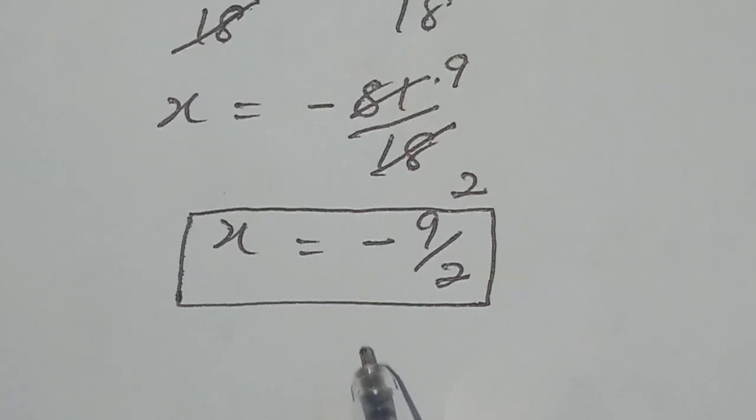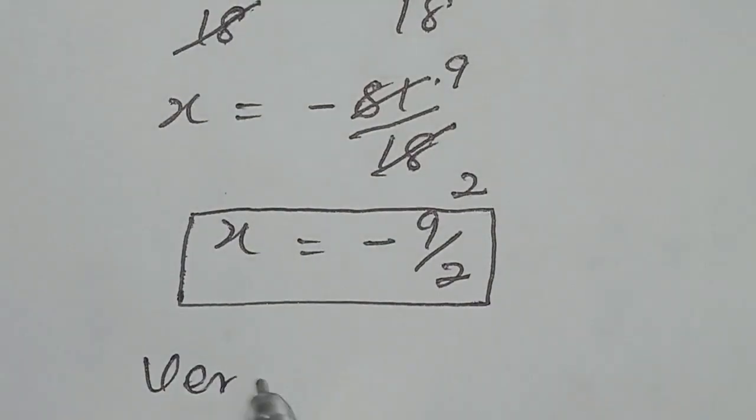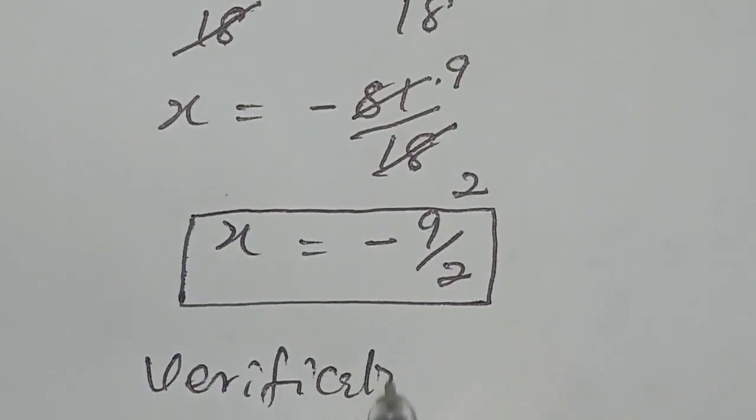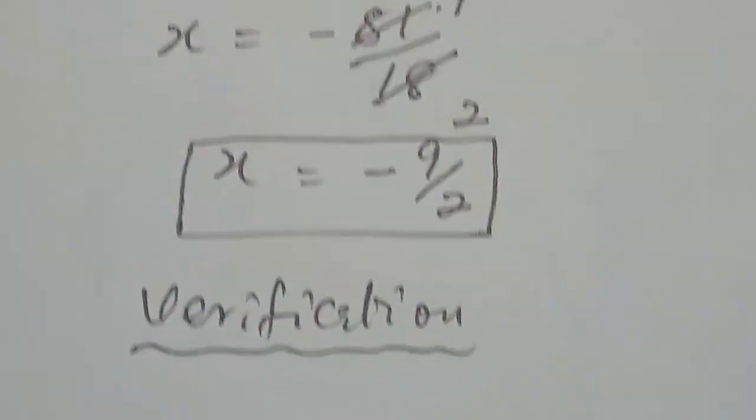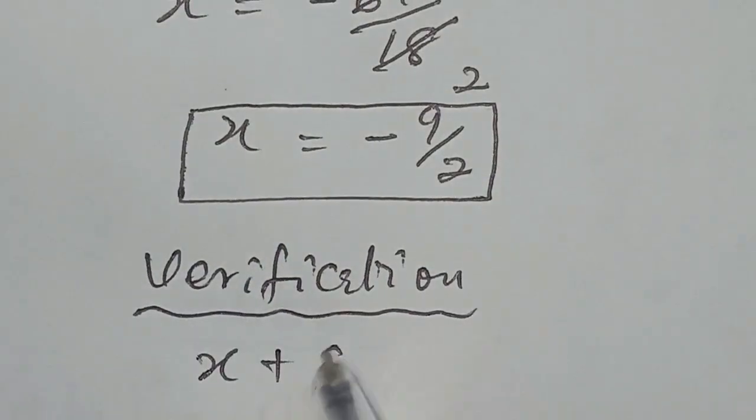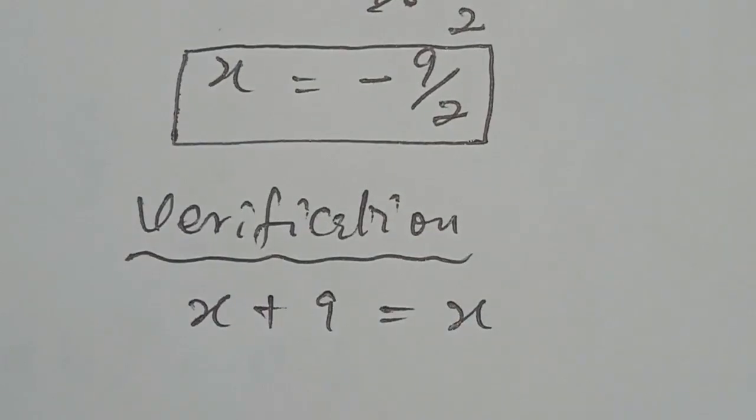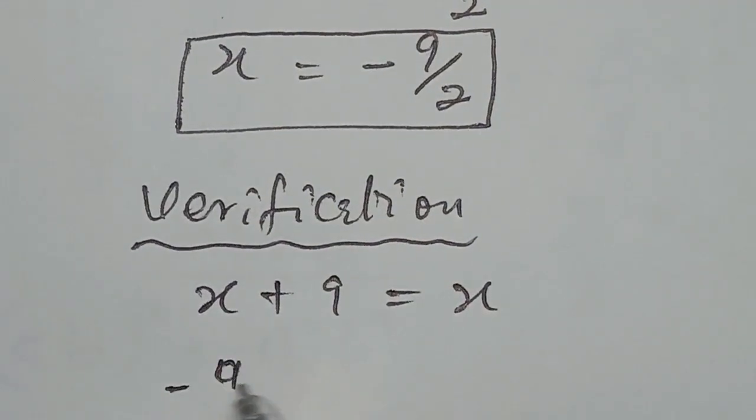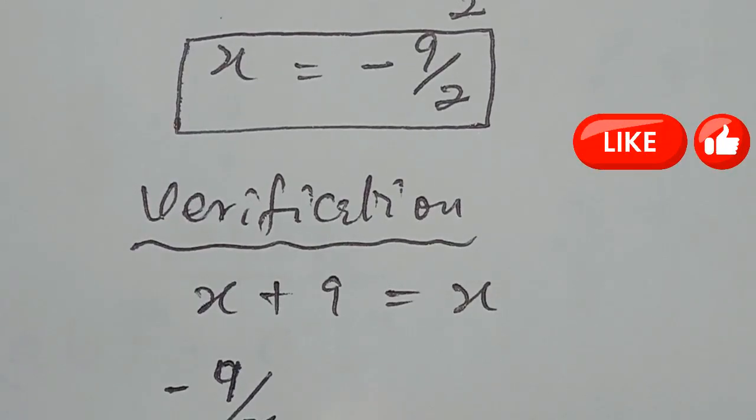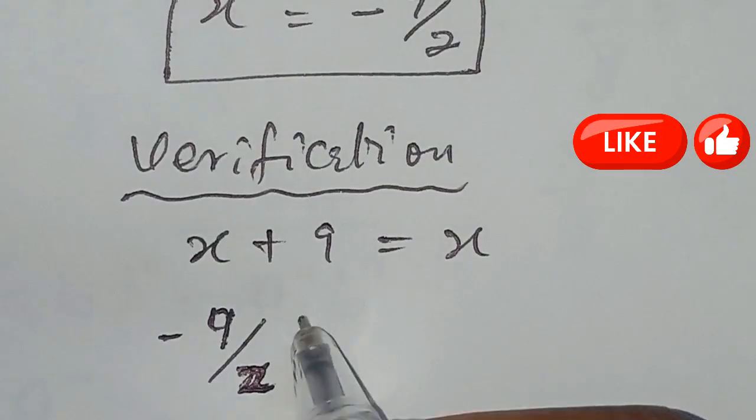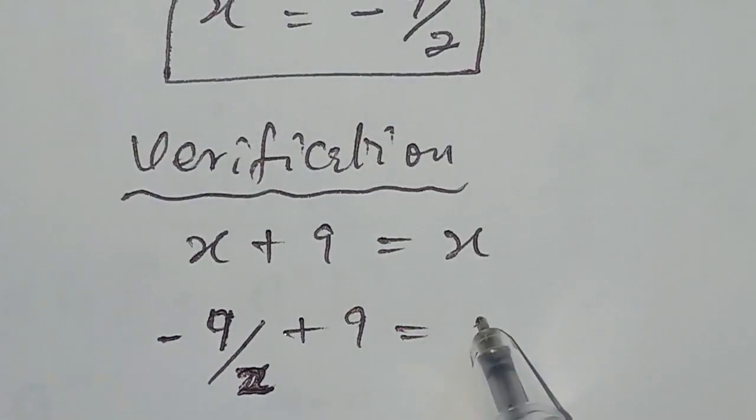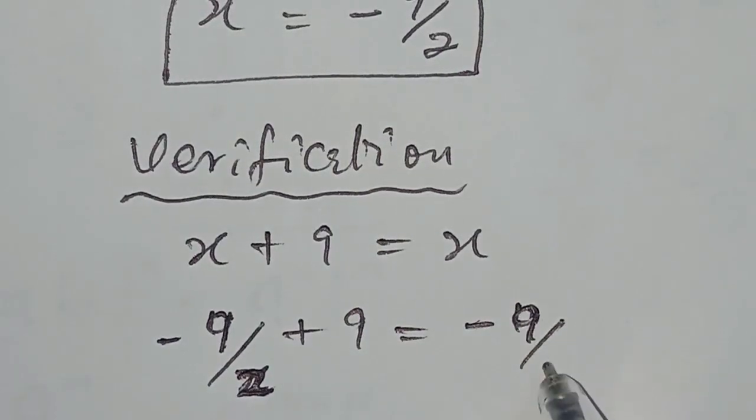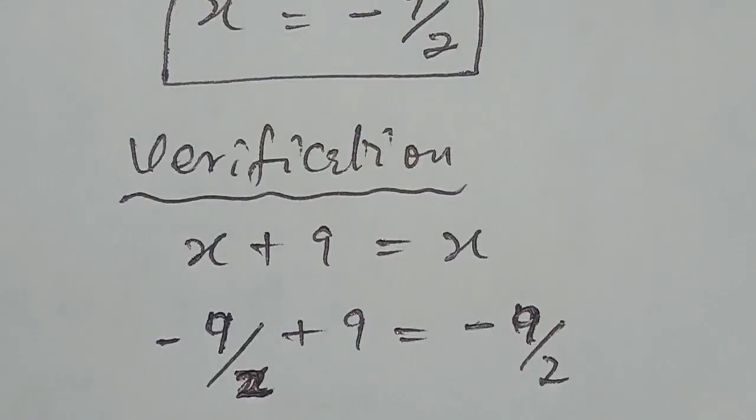Now, let's verify this value of x if it confirms our expression. Verification: we have x plus 9 equal to x. We substitute for the value of x. We have minus 9 over 2 plus 9 equal to minus 9 over 2.